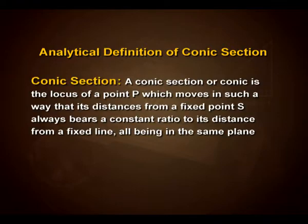Now, let us look into the analytical definition of a conic section. A conic section or conic is the locus of a point P which moves in such a way that its distance from a fixed point S always bears a constant ratio to its distance from a fixed line, all being in the same plane.